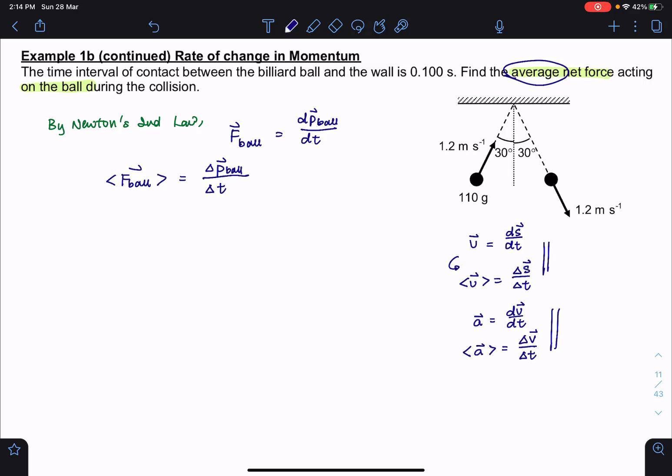Now, I'm going to first focus on the magnitude of this average value. Earlier on in our question, we found that the magnitude of the change in momentum is 0.23. So this is actually found earlier in 1a. For this question, we have one extra information. The interval of contact between the billiard ball and the wall is 0.100 seconds. So that is the time where the ball is actually changing momentum. So this would be 0.100 seconds, and that will work out to be 2.3 N.